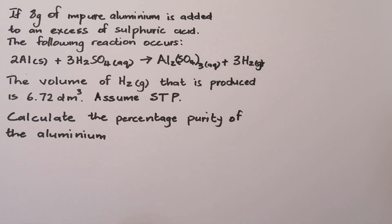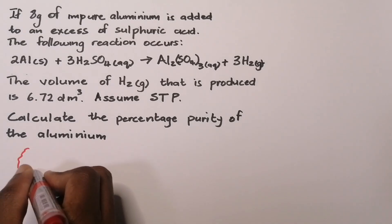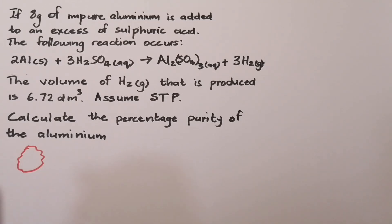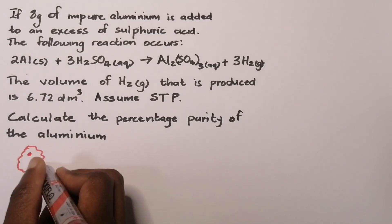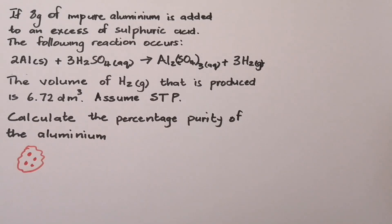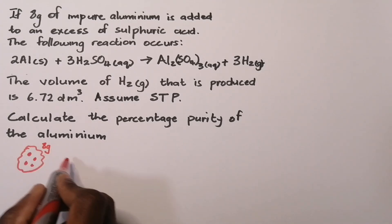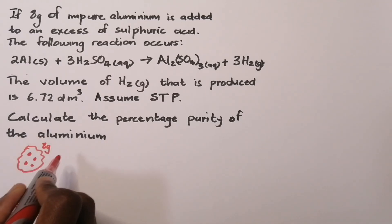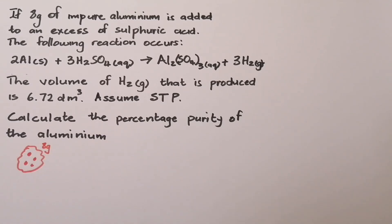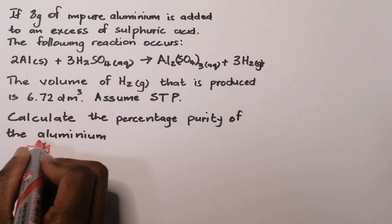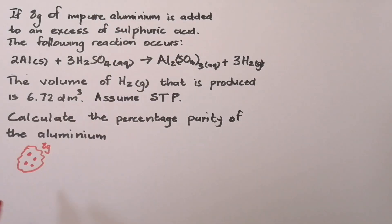Let me give you a bit of background on how we calculate percentage purity. Imagine you've got a sample of aluminium — there are some impurities in it. In actual sense, you can't use the entire eight grams and say you can calculate number of moles from that mass, because not all of those eight grams is actually made out of aluminium.